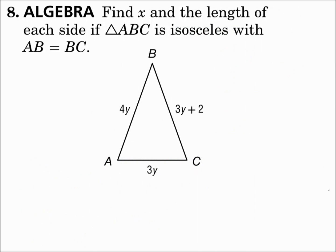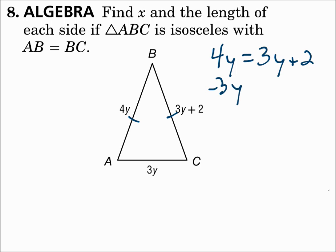Number eight: find x and the length of each side if triangle ABC is isosceles, with the measure of segment AB equal to the measure of segment BC. Since AB and BC are the congruent sides, make their measures equal: 4y = 3y + 2. Subtracting 3y from each side gives y = 2.